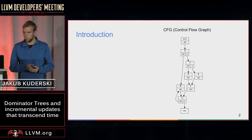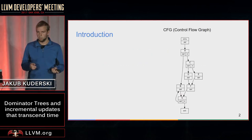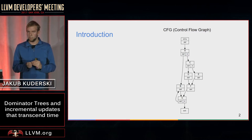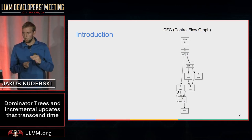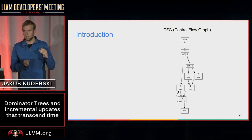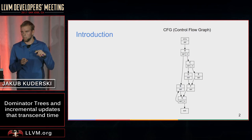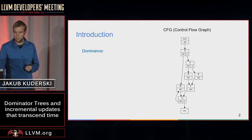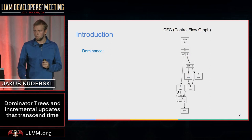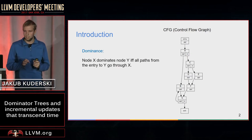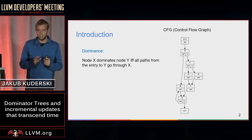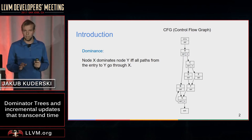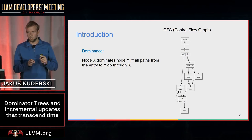Let's start with some definitions. First we have control flow graph. If you think about a function, it has some basic blocks. Those basic blocks correspond to nodes in the CFG, and jumps at the end of basic blocks form directed edges in the CFG. Dominance is a relationship in the CFG...